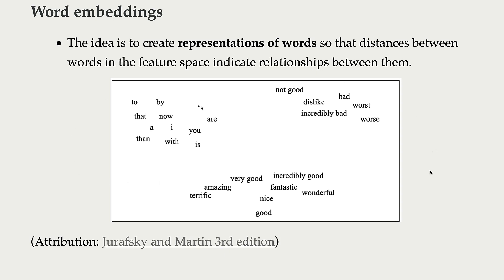Here is an example. We see that similar words are close together in our feature space — we have a cluster of words with positive connotation and a cluster of words with negative connotation. Typically, word embeddings or word vectors will have more than two dimensions. Here we are only showing two dimensions for visualization, so you can think of this as a PCA plot with the first two principal components of our word vectors.